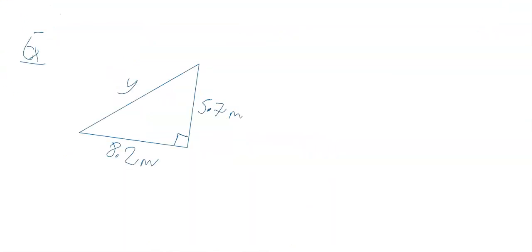In our second example, our triangle is a bit off-skew, but it doesn't make a difference. You can still see that y is opposite your right angle, so y is the hypotenuse. I'm just going to write down the formula again: c² = a² + b², where c is the hypotenuse. So in this case, y² = 8.2² + 5.7².